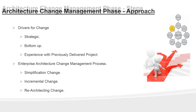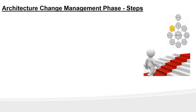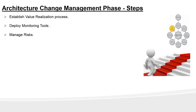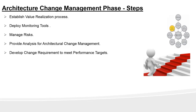Now let's look at the steps. The first step is to establish a value realization process — that is, did you get the expected value from the implementation of the architectural work? Next: deploy monitoring tools, manage risk, provide analysis for architectural change management, develop change requirements to meet performance targets (usually in terms of revenues or value to the business), manage governance, and lastly activate the process to deploy the change.